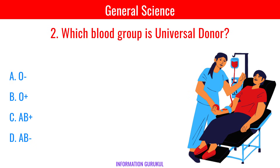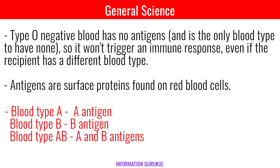Which blood group is universal donor? O-. Type O- blood has no antigens and is the only blood type to have none, so it won't trigger an immune response, even if the recipient has a different blood type. Antigens are surface proteins found on red blood cells. Blood type A has an A antigen, while blood type B has a B antigen and blood type AB has both A and B antigens.